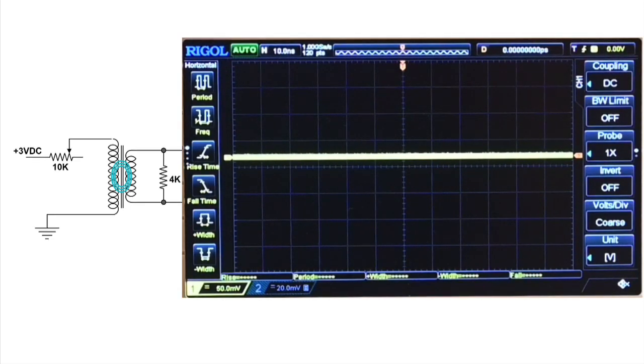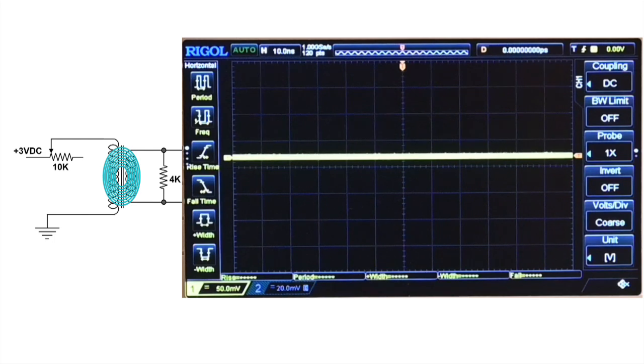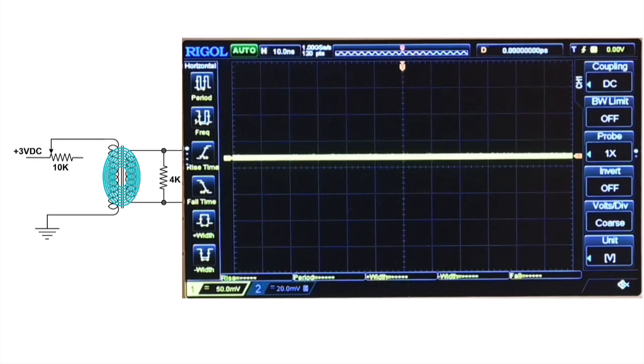Okay, I'm going to turn the variable resistor up. And we get a positive pulse. And when I turn it back down we get a negative pulse.